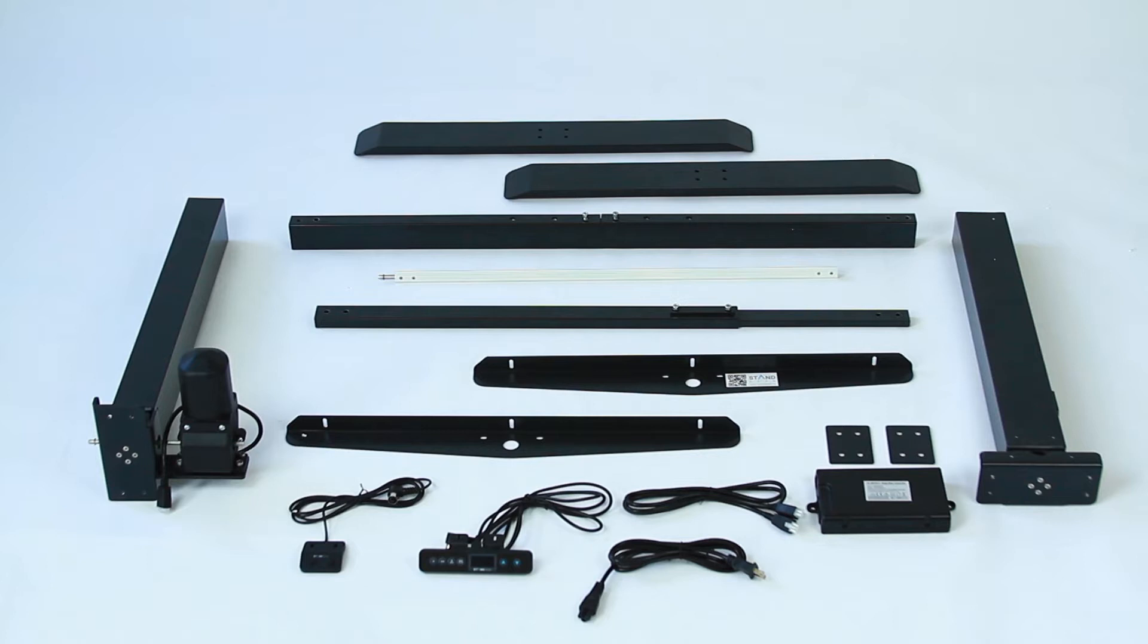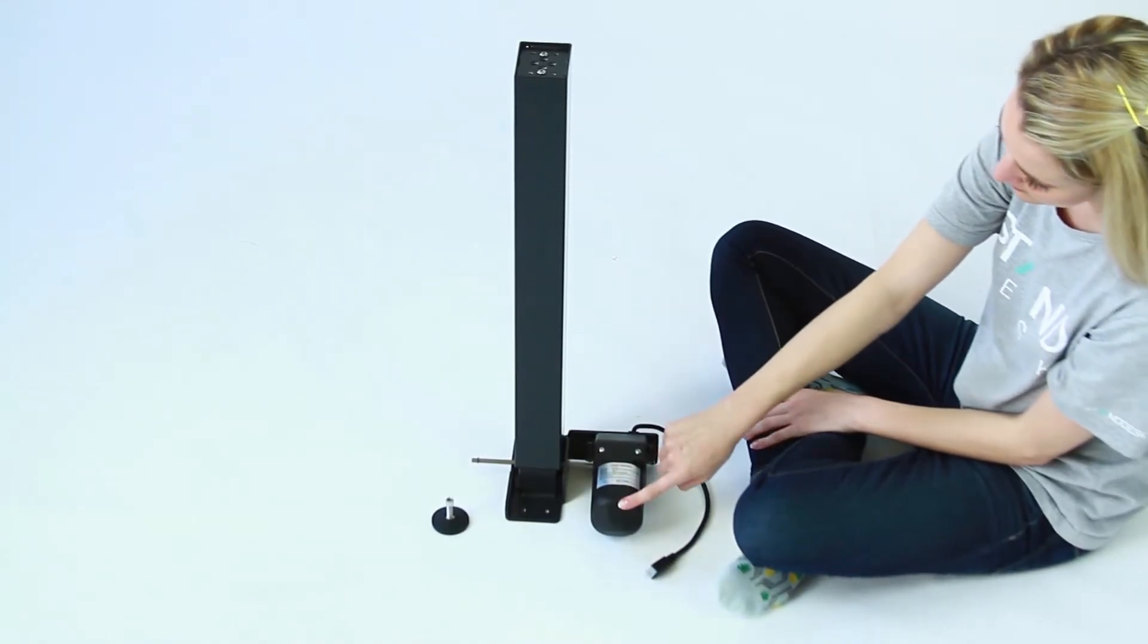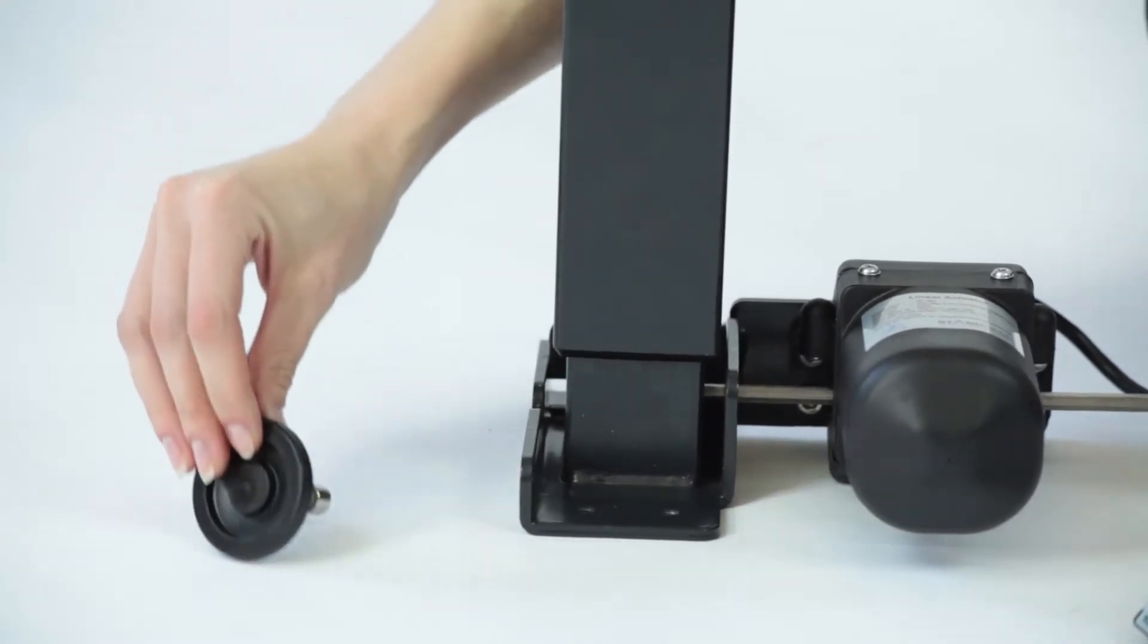The optional upgrades include one cable management tray and one crossbar. First grab your desk leg with motor. Before you get started you must push the rod through the leg with the tool provided and use both your hands. This is really important so make sure to do this first.